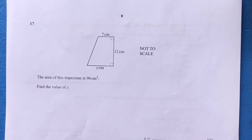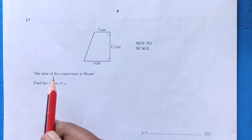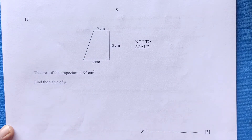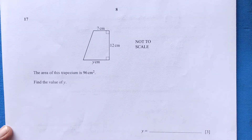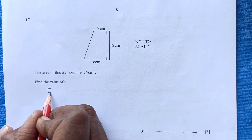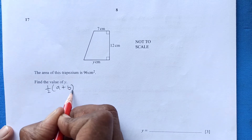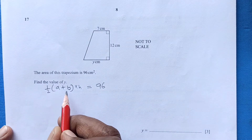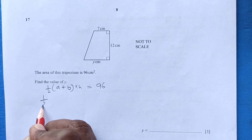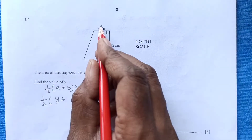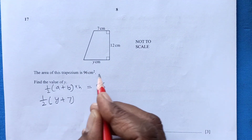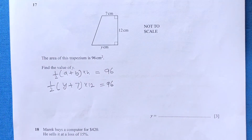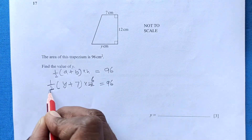Question 17: we are given a trapezium where the area is 96. The formula for the area of a trapezium is half times (a + b) times h equals 96, where a and b are the parallel sides. So a is y, b is 7, and the height given is 12, equals 96.